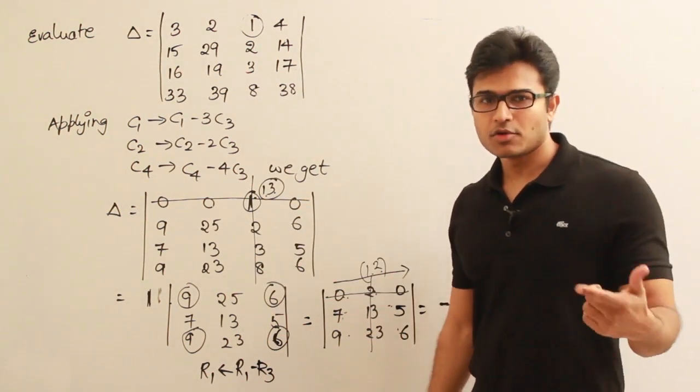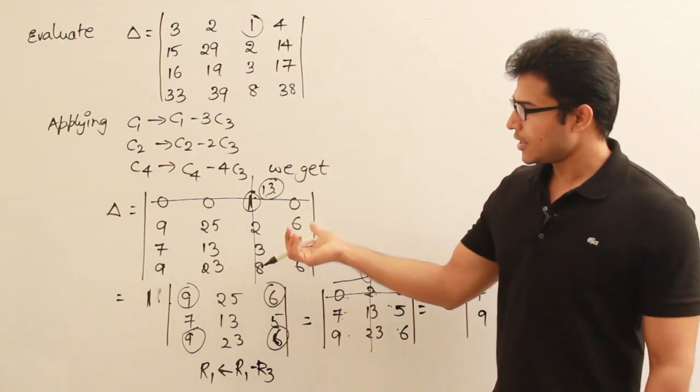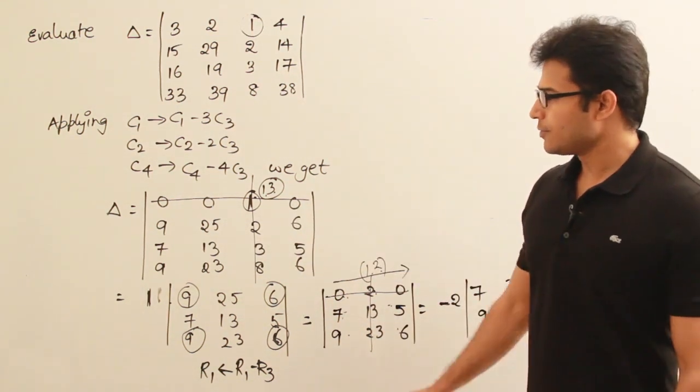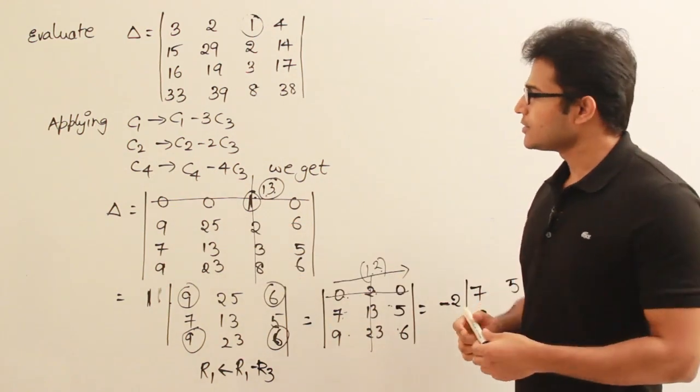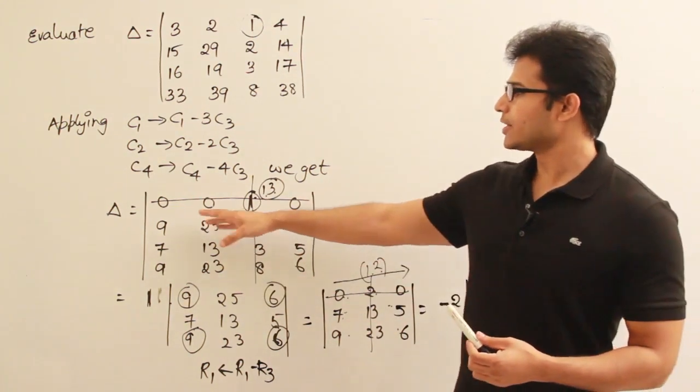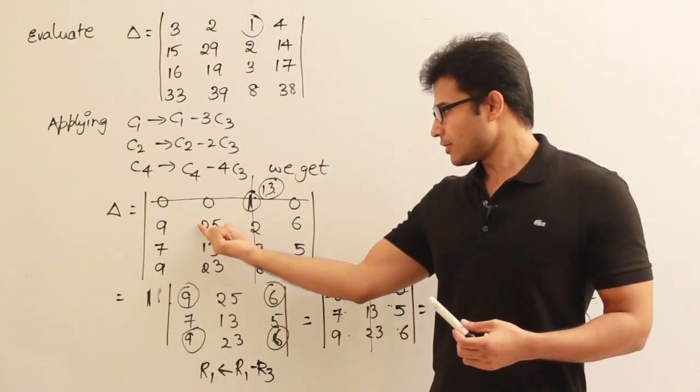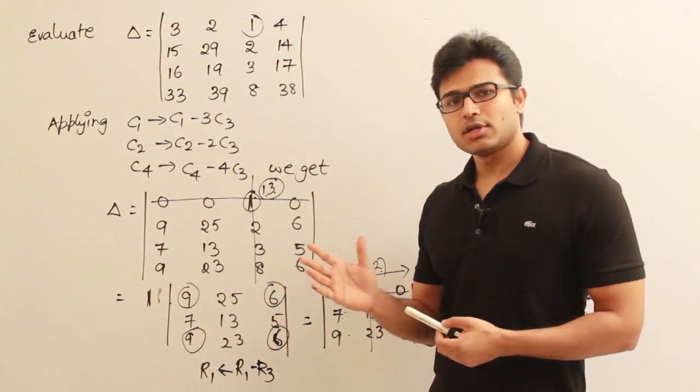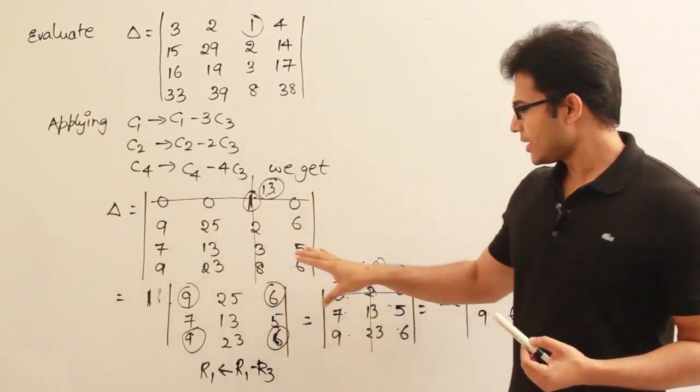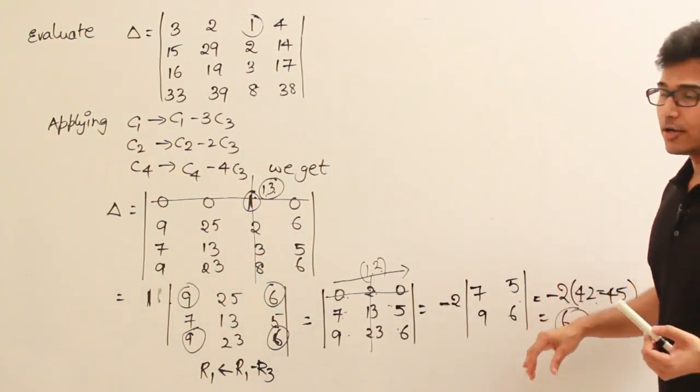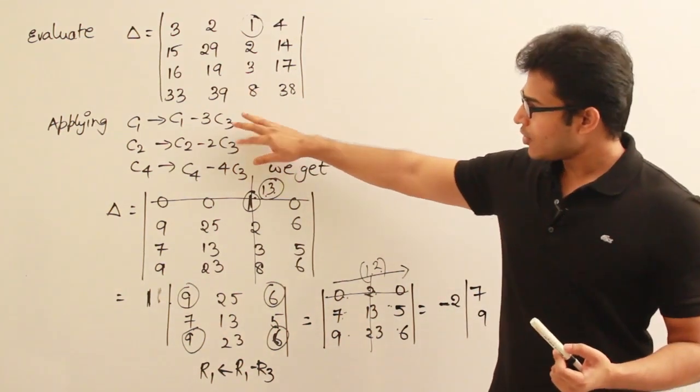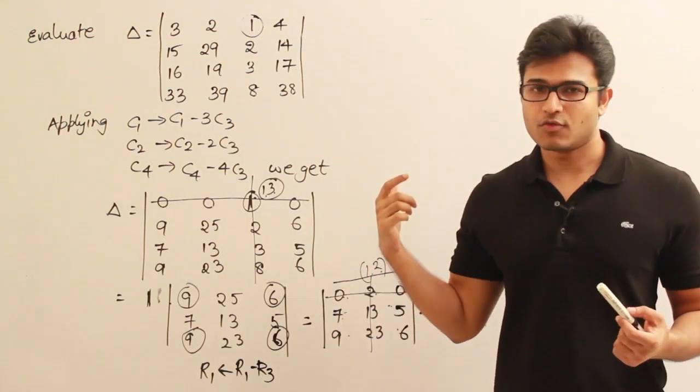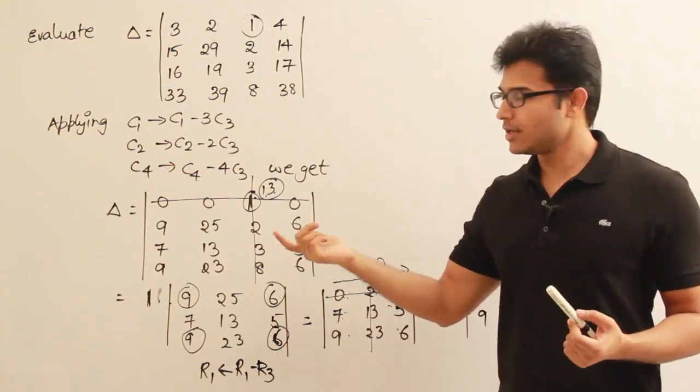The main intention behind showing this is how you can use the column operations and row operations to see that most of the elements of a row or column is going to be zero. There are various ways to do it. This is not the only way. You can do it in your own way also, but finally the answer is going to be the same. Whatever procedure you follow, the final answer should always be 6.